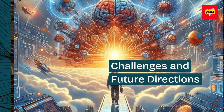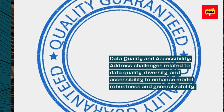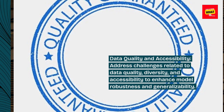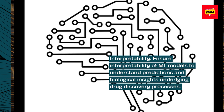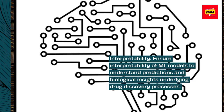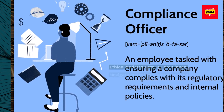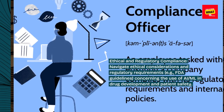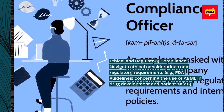Challenges and future directions. Data quality and accessibility: Address challenges related to data quality, diversity, and accessibility to enhance model robustness and generalizability. Interpretability: Ensure interpretability of ML models to understand predictions and biological insights underlying drug discovery processes. Ethical and regulatory compliance: Navigate ethical considerations and regulatory requirements, e.g., FDA guidelines, concerning the use of AI and ML in drug development and patient safety.